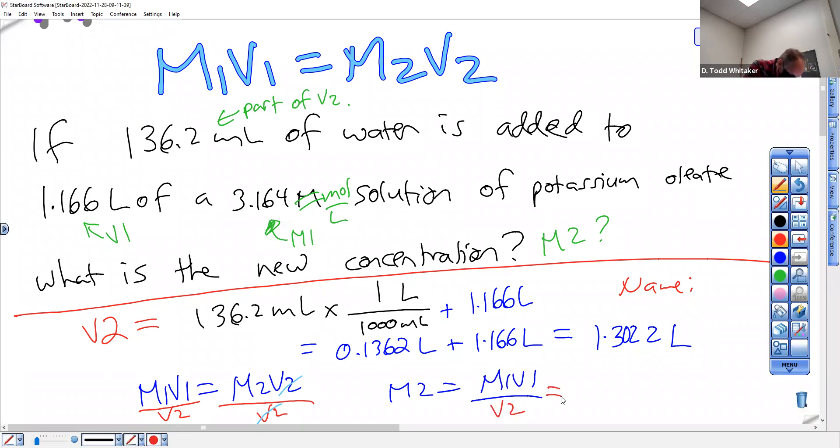M1 given 3.164 moles per liter. Times V1 given 1.166 L. L's gone. We got moles. V2's liters. V2 is 1.3022.